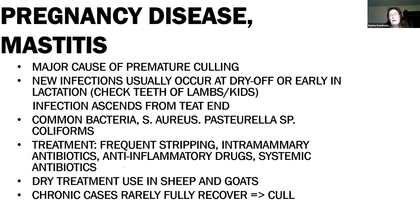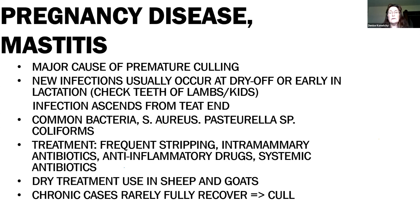Generally what's happening with mastitis is it's an ascending bacteria that gains entrance from the end of the teat and moves up into the mammary gland causing inflammation and infection. If we can identify these early on, we can use intramammary treatments. We do not have any labeled for small ruminants, so we get into extra label use — I would recommend working with your veterinarian so you're following all the guidelines for extra label use. These can be very effective in getting rid of acute cases of mastitis and not allowing them to go on to become chronic.